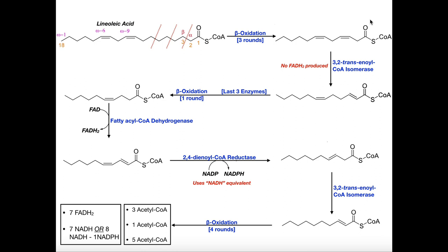Something interesting happens that we're going to have to deal with in the same way we dealt with it in the monounsaturated fatty acid. If we look at the alpha-carbon — which is always adjacent to the carbonyl of the thioester — the beta-carbon has a double bond, and that's going to pose a problem for two reasons. First, it's not a trans-double bond; this pathway of beta-oxidation can only deal with the trans. Also, notice it's between the wrong positions. It would have to be between the alpha and beta-carbon, or positions two and three, but here it's actually between positions three and four. So not only is it the wrong geometry, being cis, it's also in the wrong position.